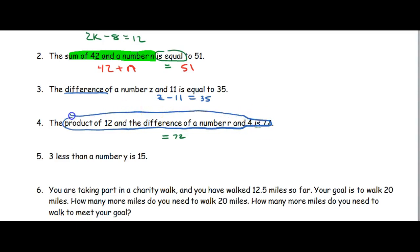If we need that difference to happen first, that means we take 12. The product means multiplication, so we're going to multiply it by the difference of a number r and 4. So we do r minus 4. You have to put the r minus 4 in parentheses, because it's the product of 12 and the difference. So the difference has to be calculated first, which means it has to go in parentheses.